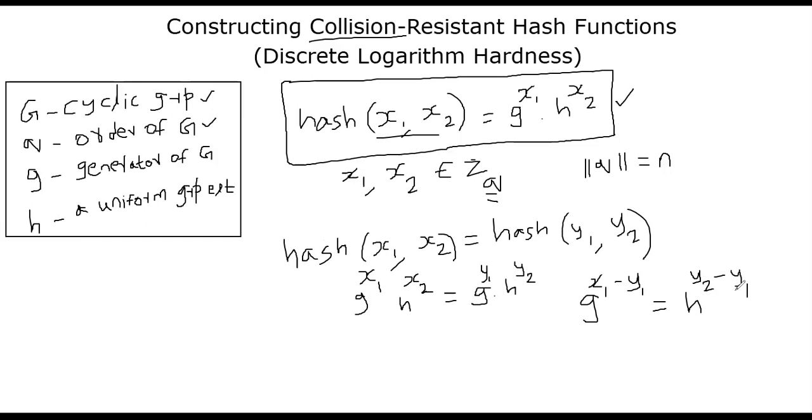Therefore, we can just raise multiplicative inverse of y2 minus x2 on both sides. So you could just say g power x1 minus y1 power y2 minus x2 inverse. I'm raising the power of y2 minus x2 on both sides. That means you found an interesting thing.